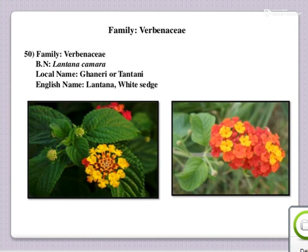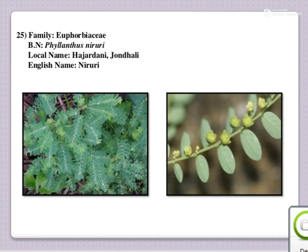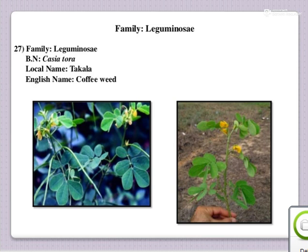The English name is Lantana or White Sage; family is Verbenaceae. This is an ornamental weed and commonly occurring all over the land. The next one is Hazardani or Jondhadi Gavat; English name is Niruri and botanical name is Phyllanthus niruri; family is Euphorbiaceae. This is a rainy seasonal weed, mostly occurring in the rainy season.